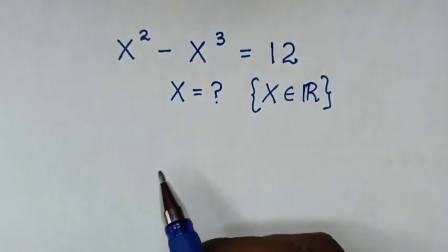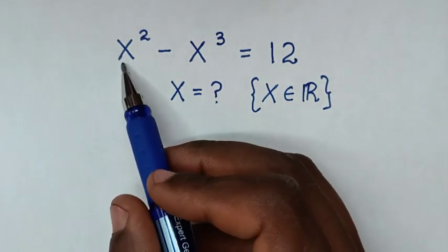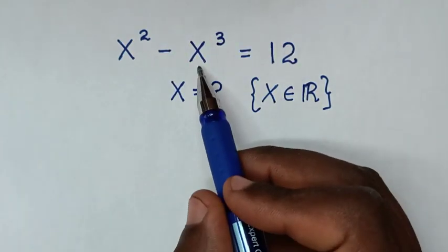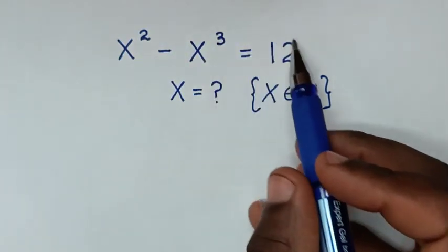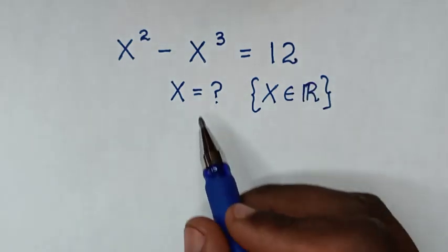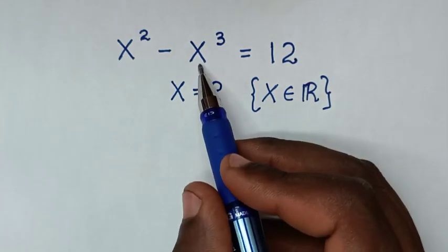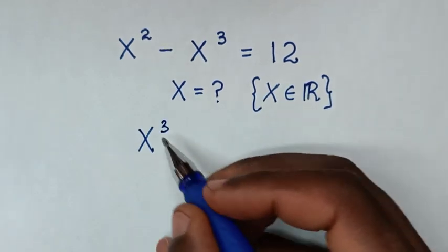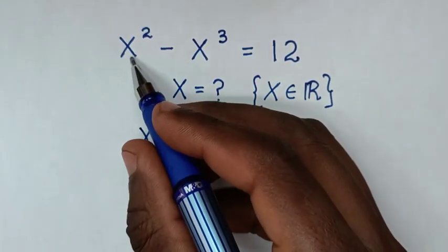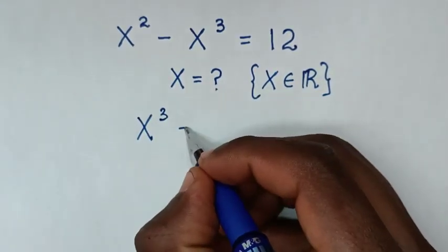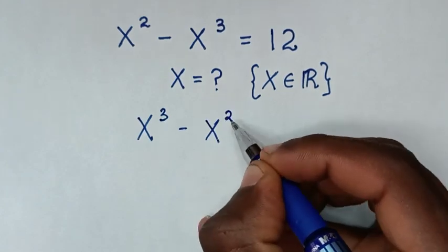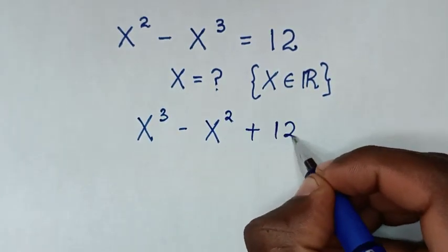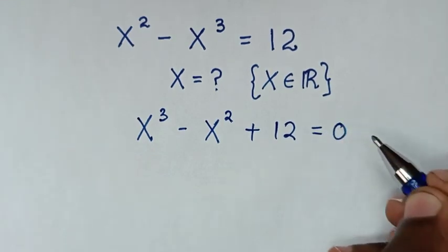First, we take this x squared to the right side and this negative x cubed to the right side. So this negative x cubed becomes positive x cubed, and this x squared becomes negative x squared, then plus 12 is equal to 0.